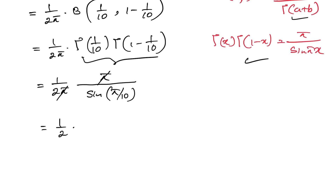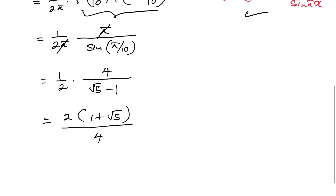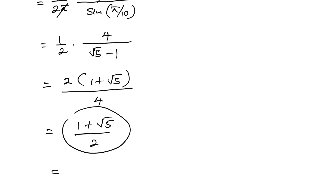The π cancels, leaving 1 over 2 times sin(π/10). We know that sin(π/10) equals (√5 minus 1) over 4. So multiplying both numerator and denominator by (1 plus √5), we get 2(1 plus √5) over (5 minus 1), which is 4. The 2 cancels, giving (1 plus √5) over 2. This is the golden ratio, and that is our final answer.